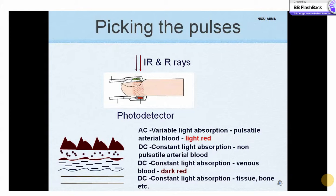Scatter, reflection, and absorbance of light by other tissues and blood components could confound the values. This is solved by the pulsatile nature of arterial blood, which increases the path length, thereby increasing the absorbance. Other tissues, being static, do not contribute to the reading.